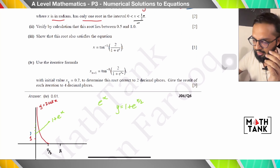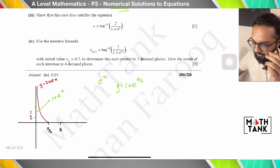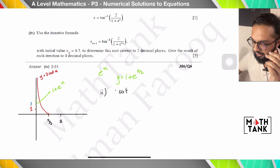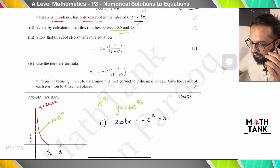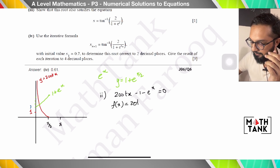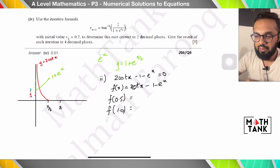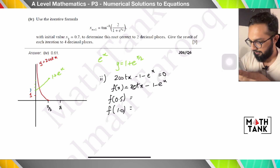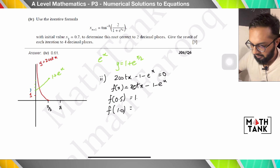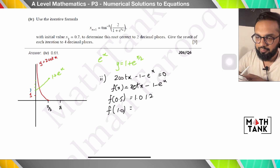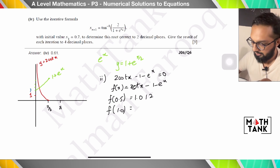Verify by calculation that this root lies between 0.5 and 1. Bringing everything to one side: f(x) = 2 cot x − 1 − eˣ = 0, or equivalently 2/tan x − 1 − eˣ. Testing on my calculator: f(0.5) gives approximately −1.012 and f(1) gives approximately −2.43 — wait, checking the signs: there is a change of sign, which indicates a root.